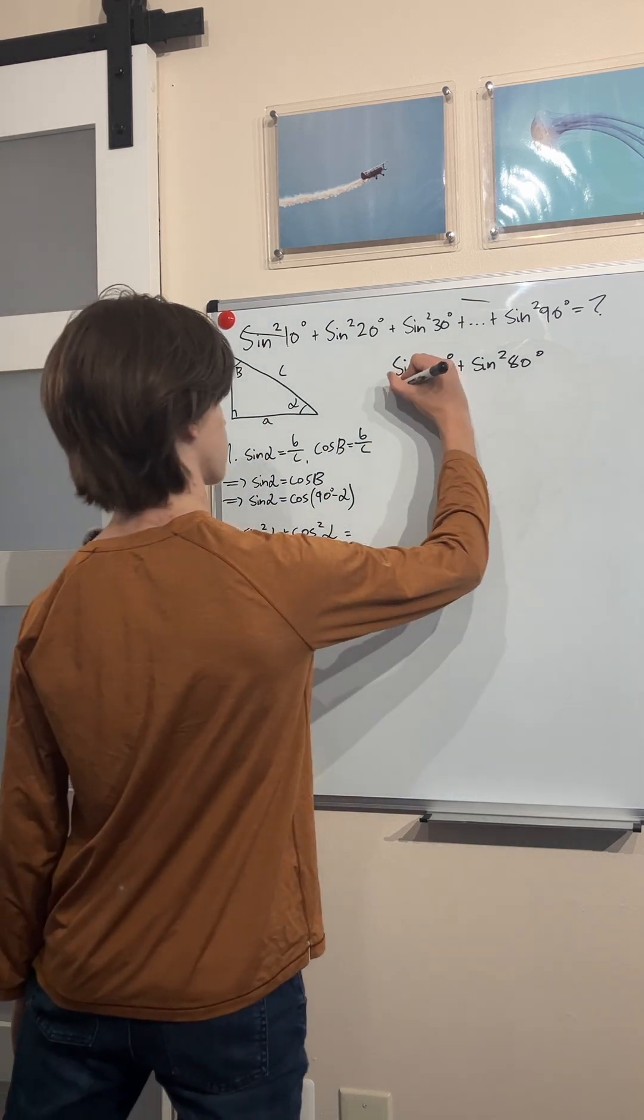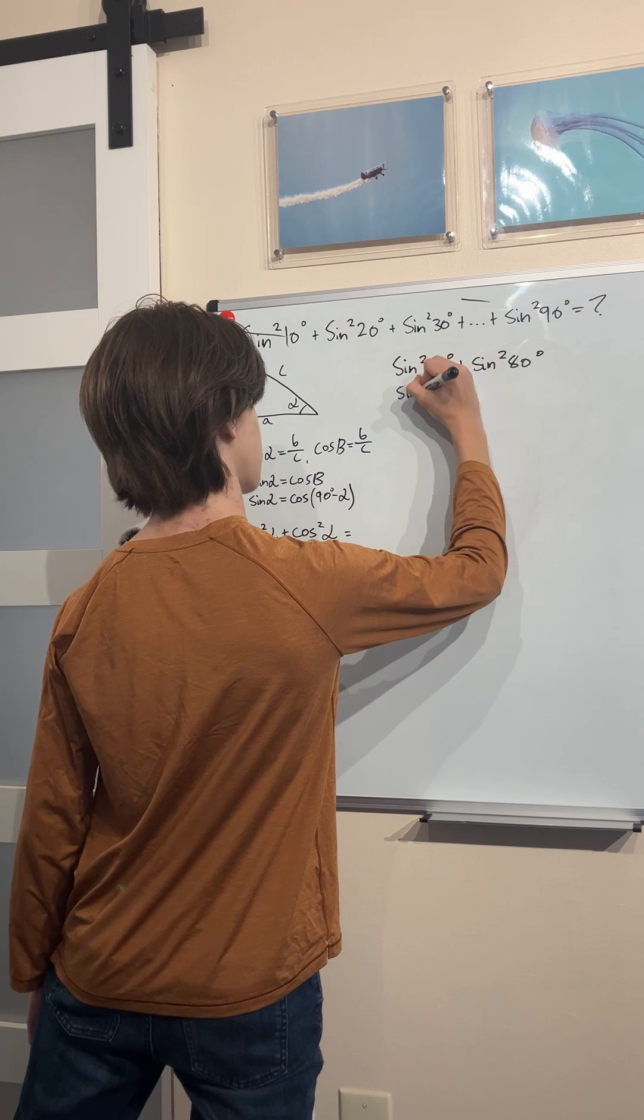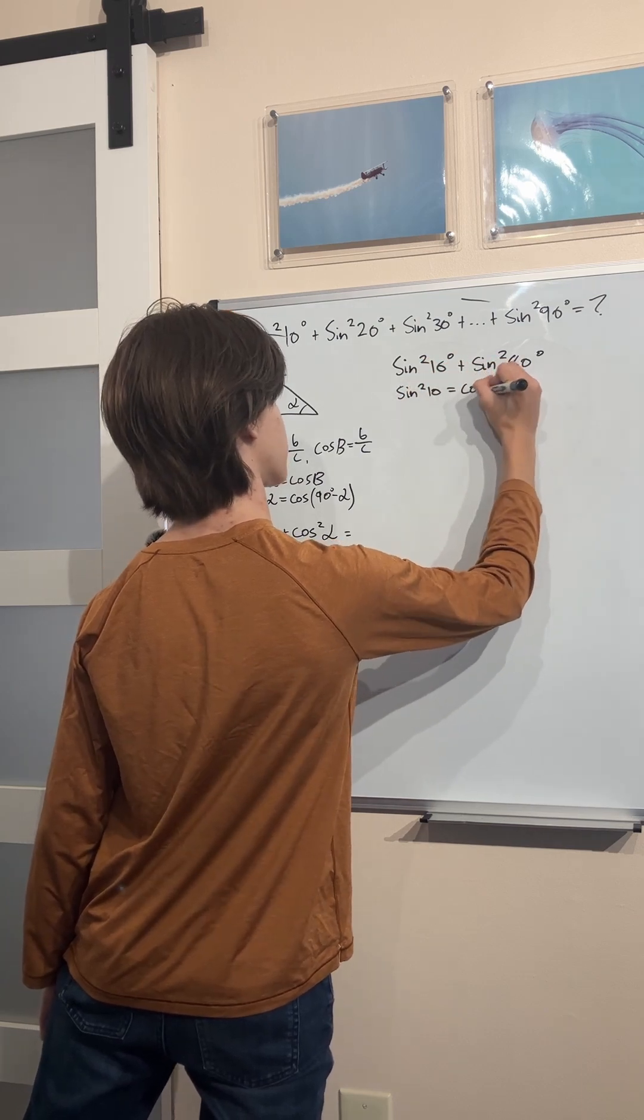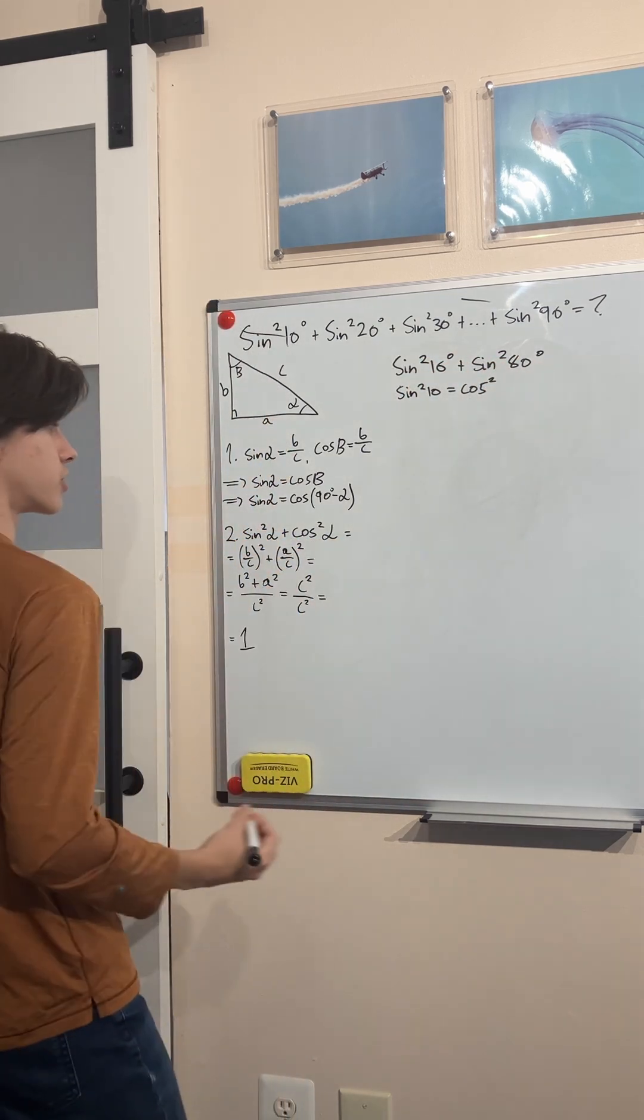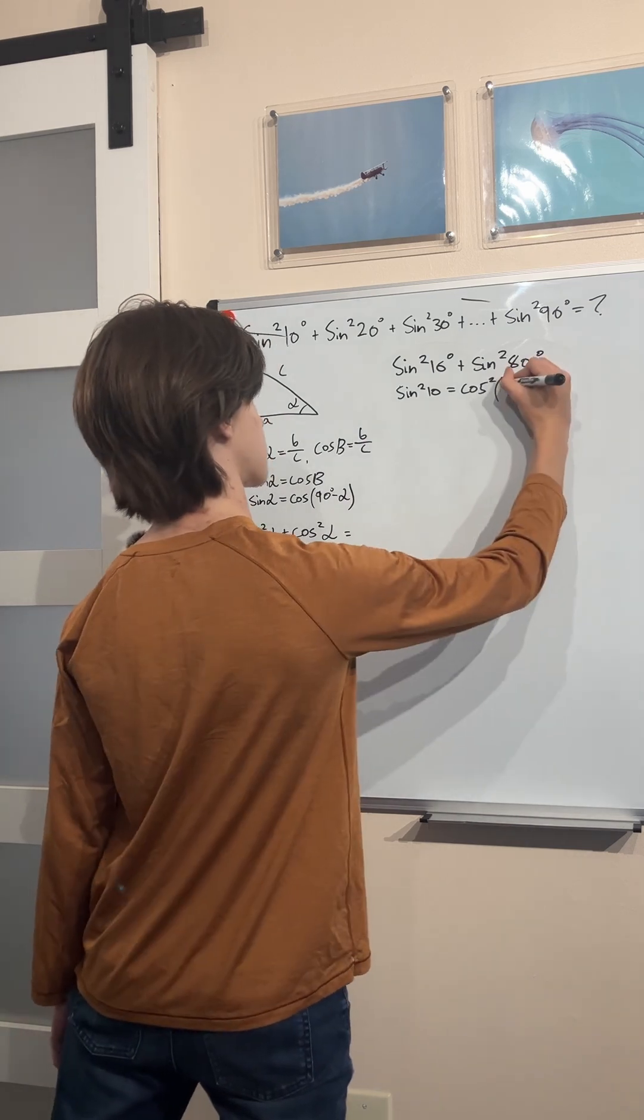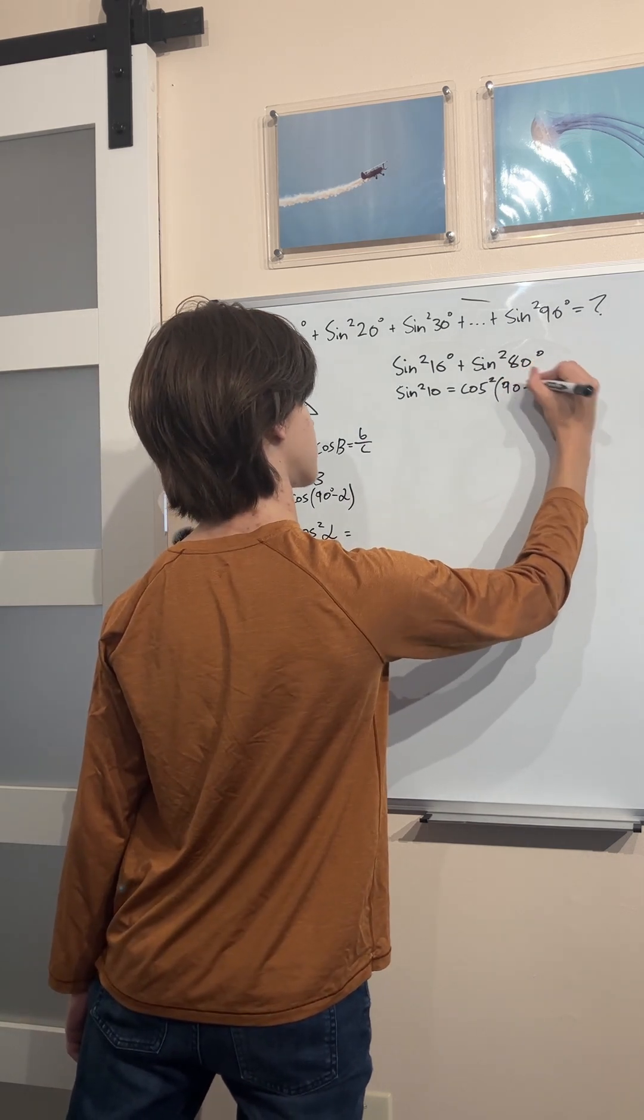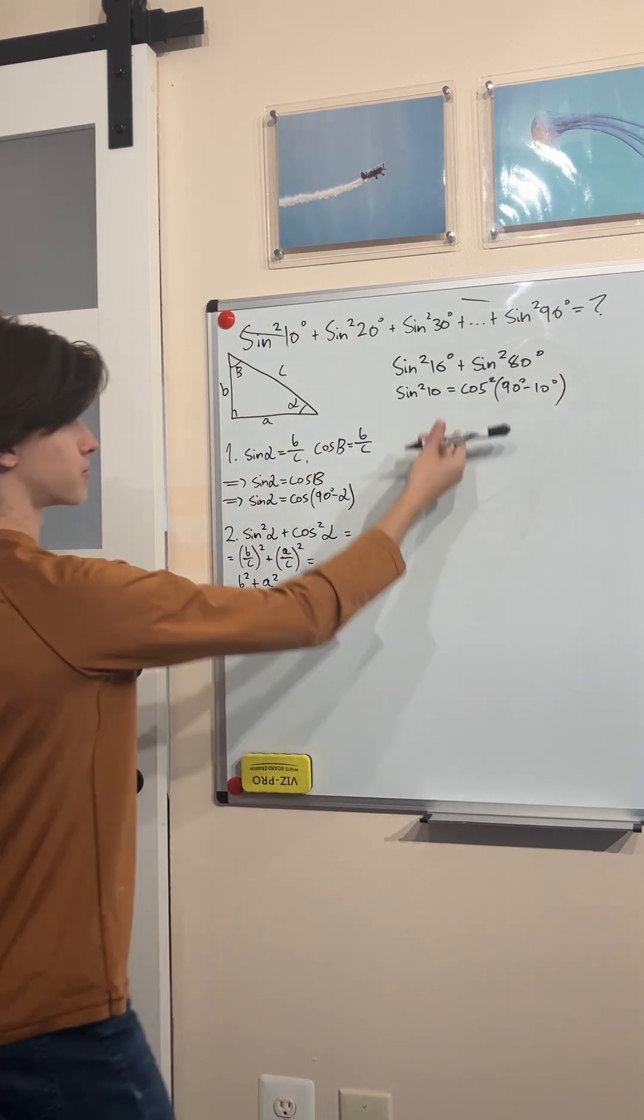Now remember using our complementary identity that the sine squared of 10 degrees is equal to the cosine squared of its complement, so 90 minus 10. And look at that, that's just 80.